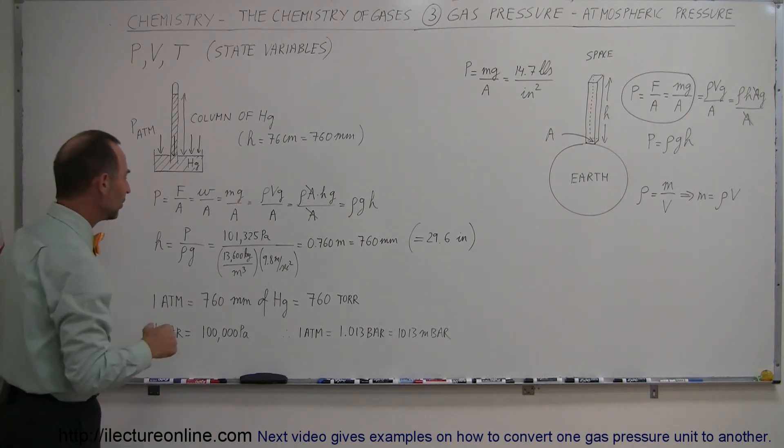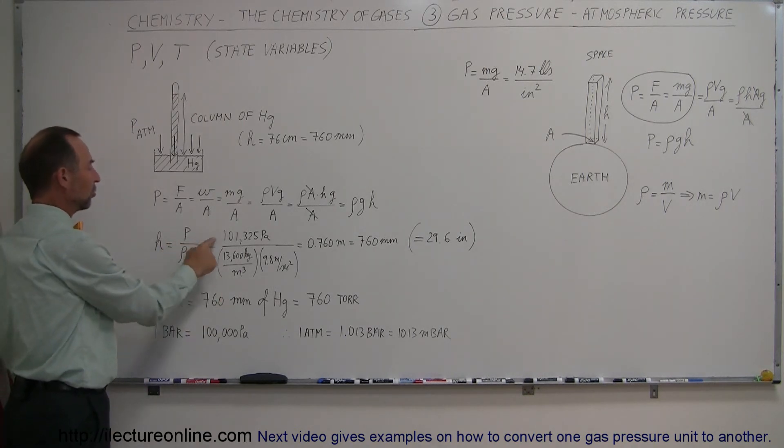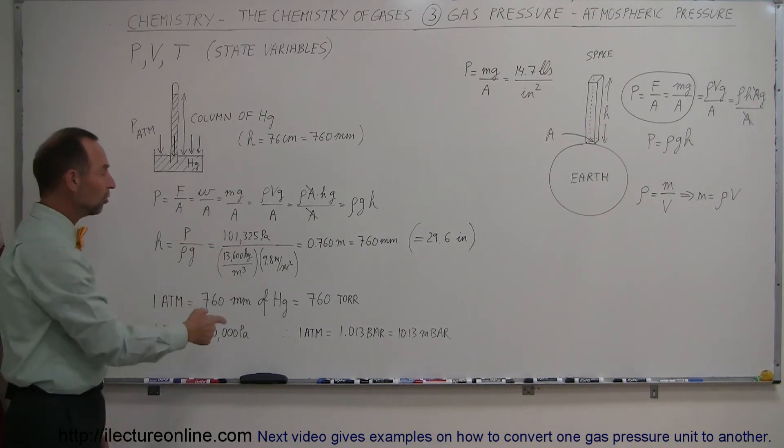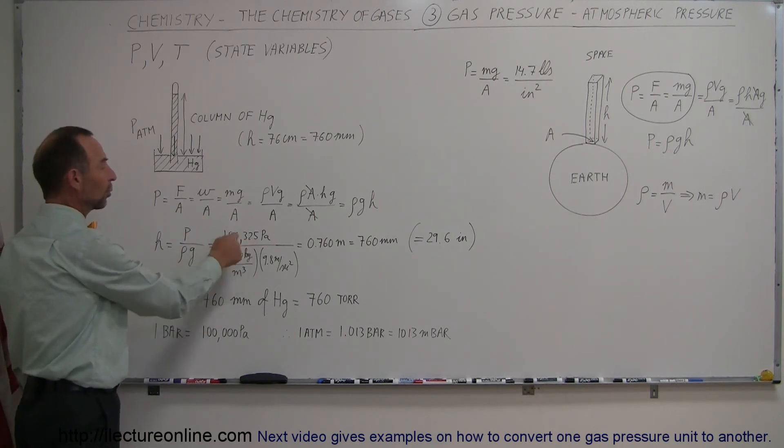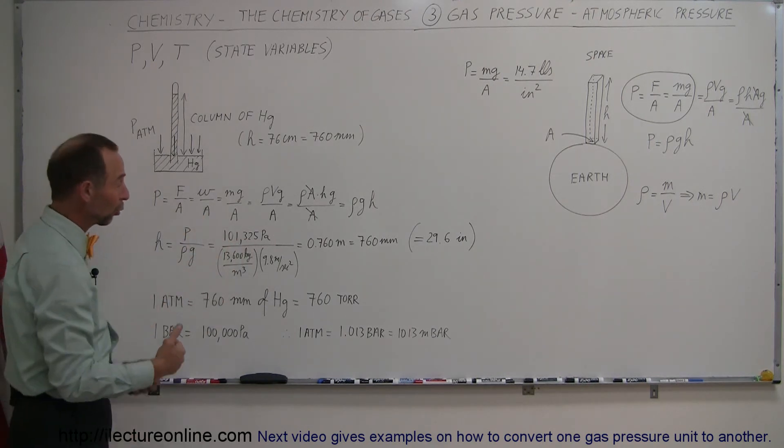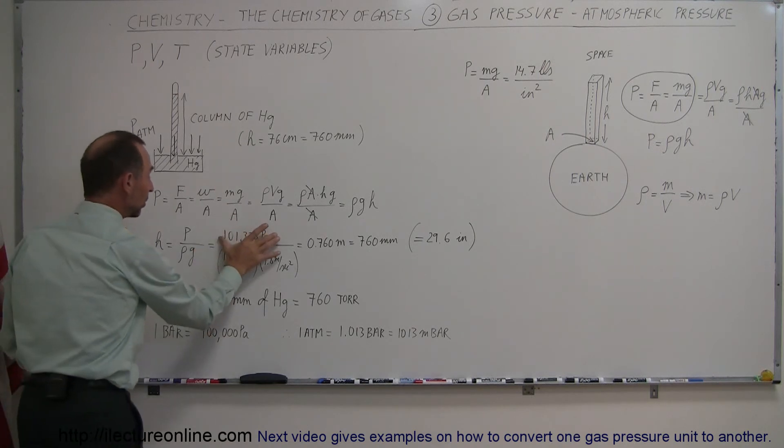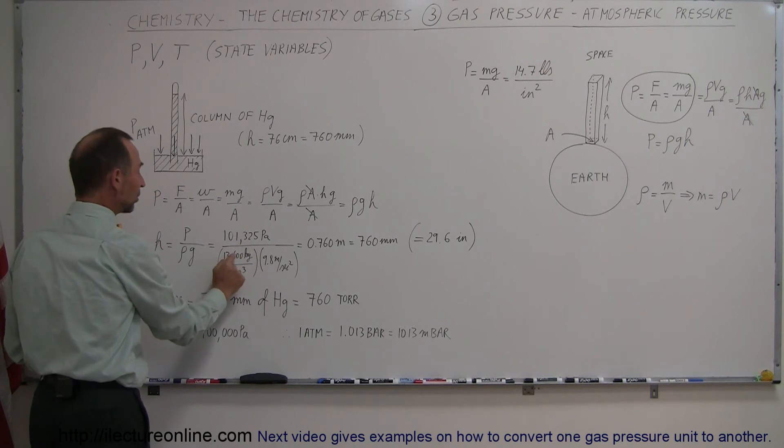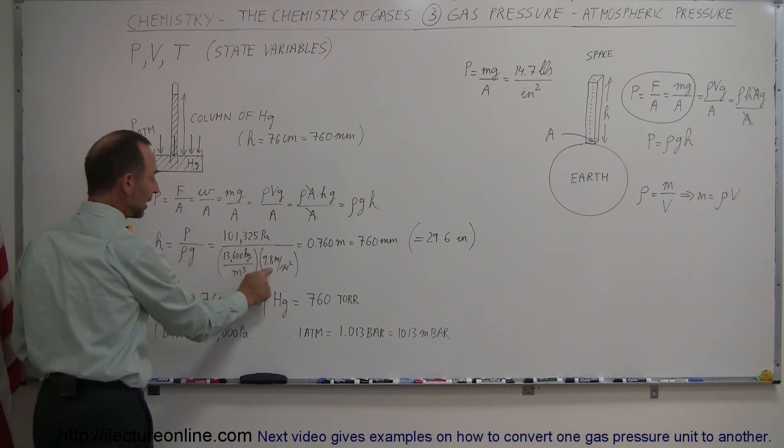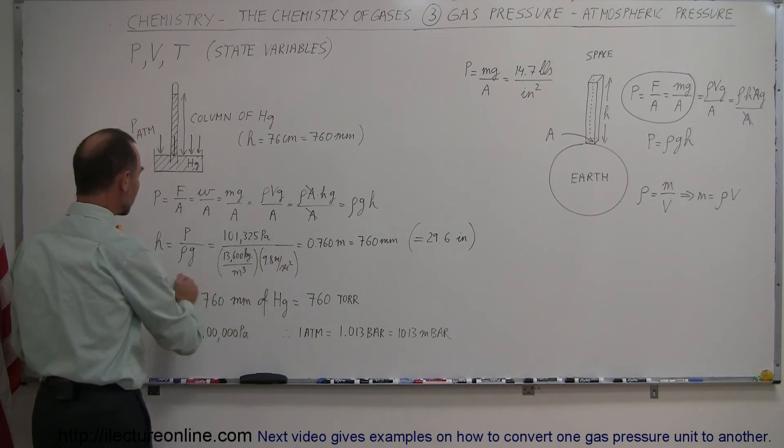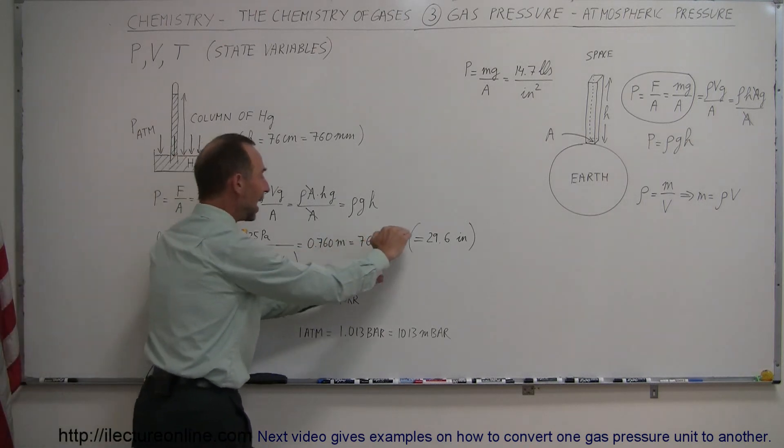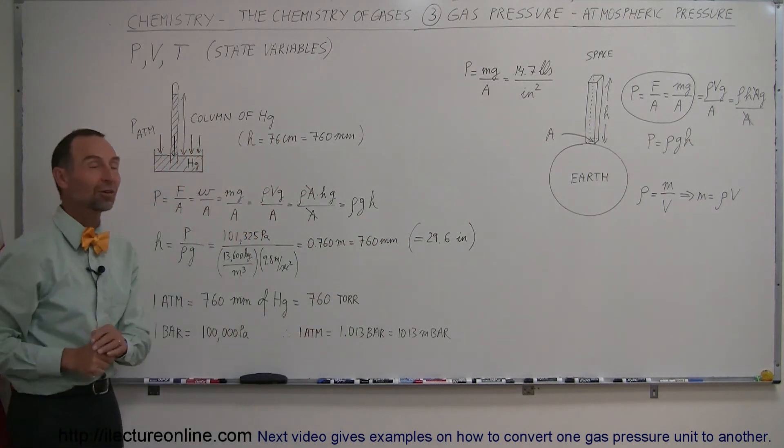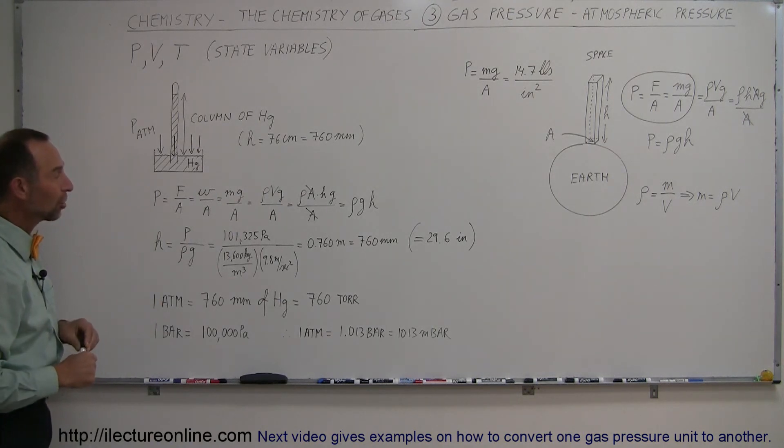But we kind of reversed that now that we know what the atmospheric pressure is, which is in standard units, 101,325 newtons per square meters or pascals. So you put in the pressure in standard units, you put in the density of mercury in terms of kilograms per cubic meters, and you put in the acceleration of gravity, 9.8 meters per second squared, and you calculate that, and sure enough, you get a height of 760 millimeters, exactly what Torricelli measured.